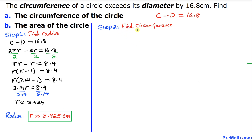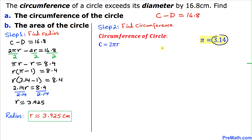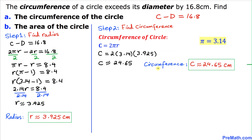In step two, we calculate the circumference of the circle using the formula c = 2πr. We already found r, and π ≈ 3.14. So c = 2 × 3.14 × 3.925, which gives us c ≈ 24.65. Thus our circumference is approximately 24.65 centimeters.